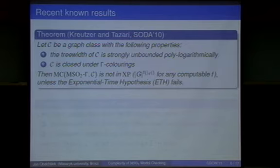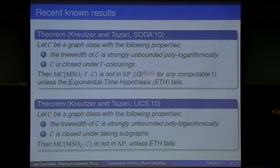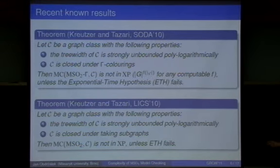The new version in LICS gets rid of the colorings and talks about just being closed under taking subgraphs. This is a nice improvement because it looks much nicer. F does not need to be computable. So you get rid of the colorings and then you get closed under taking subgraphs.